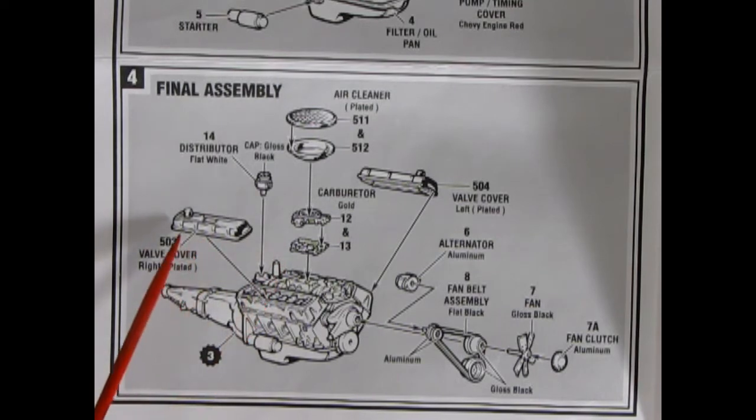Two-piece carburetor. Our special finned valve covers, which are chromed. And there's our alternator and our fan belt and pulley assembly with the fan and the clutch going on there. So, once all that is done, you have your final motor.